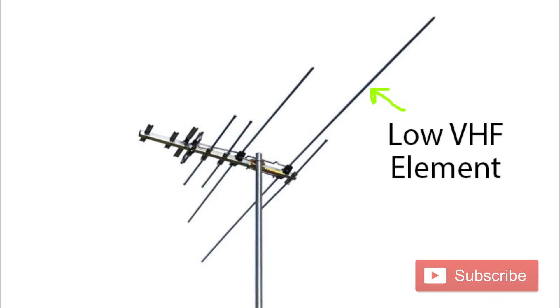Here's an example of a VHF low element on a VHF UHF combo antenna on this Winegard. You can see it's a very, very long element all the way on the end, but you need that length in order to pick up those low band channels.